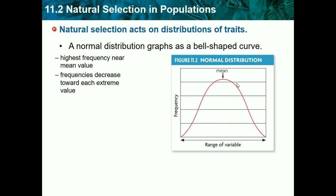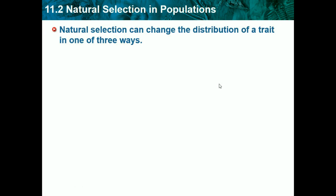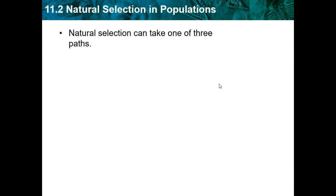Highest frequency is near the mean value, and frequencies decrease towards each extreme. Traits not undergoing natural selection have a normal distribution — if a trait doesn't affect natural selection, most individuals will have it. Microevolution is evolution within a population; it has an observable change in allele frequencies and can result from natural selection.